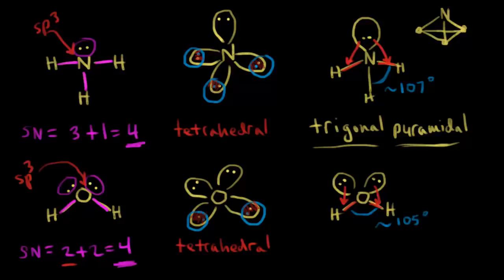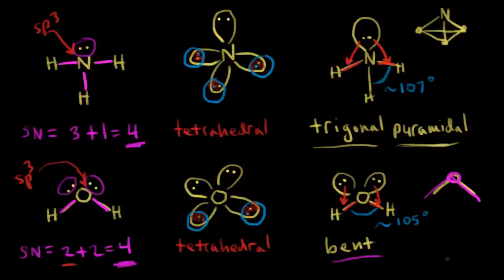Thinking about the molecular geometry, or the shape of the water molecule — we actually call this bent, or angular. It's bent geometry because you ignore the lone pairs of electrons, leaving just the oxygen and this angle. So we have bent molecular geometry, also called angular.